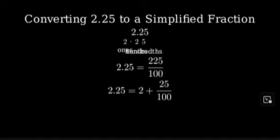To simplify the fraction part, we need to find the greatest common divisor, or GCD, of 25 and 100. Let's list out the factors. The factors of 25 are 1, 5, and 25.